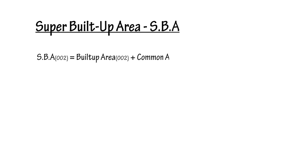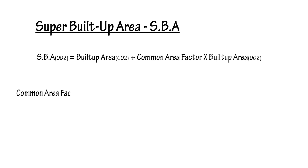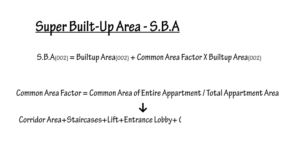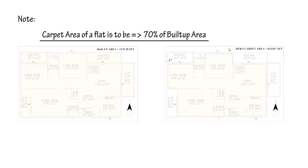Now we know how SBA is calculated. SBA of any flat = Built-up Area of that flat + (Common Area Factor × Built-up Area of that flat), where Common Area Factor = Total Common Area of the entire apartment ÷ Total Built-up Area of the apartment. This is how we obtain SBA.